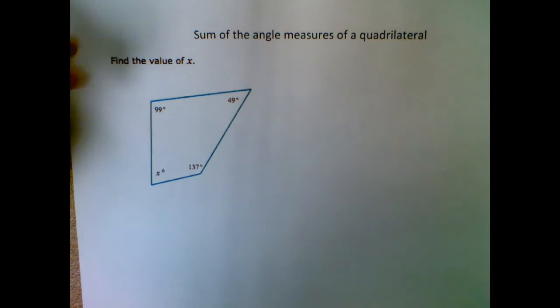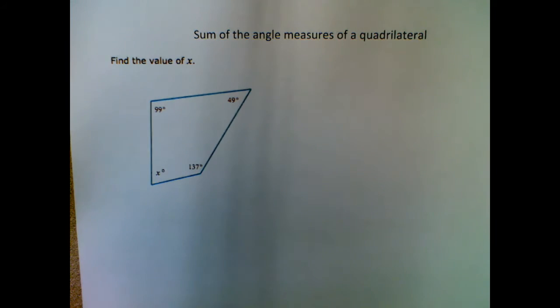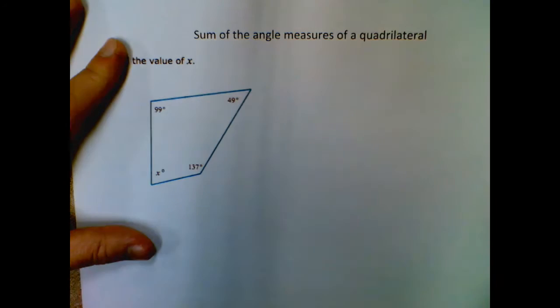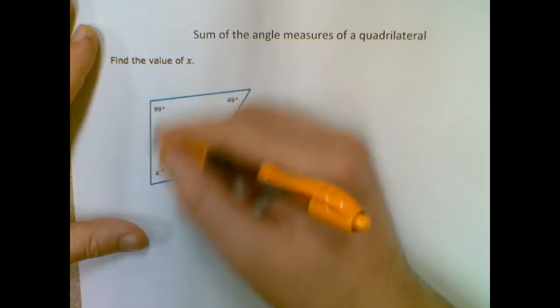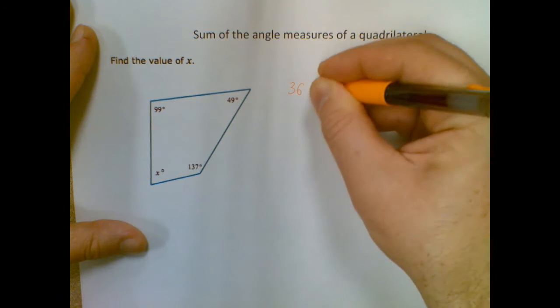So in this case, we have three angles listed as a quadrilateral when we're trying to find the missing fourth one. So just remember, anytime you're doing any sort of quadrilateral, it doesn't matter what type it is, the interior angle sum is going to be 360 degrees.